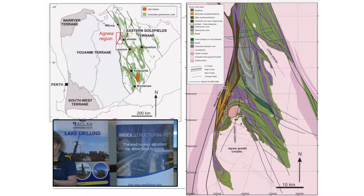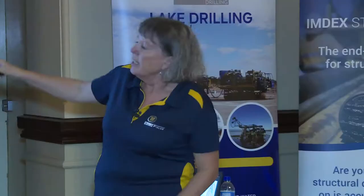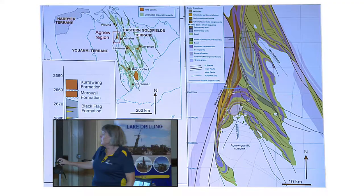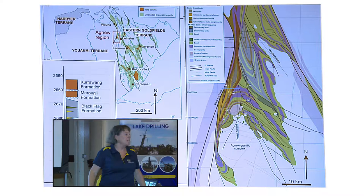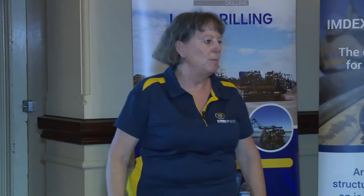The Agnew district is about 350 kilometres north of Kalgoorlie, and basically you've got a greenstone sequence that's pretty similar to the Kalgoorlie sequence. You've got the basal sequence of mafic and ultramafic units, overlaid by felsic and clastic sequences, and then the younger unconformably overlying lake basins. So again, very similar to Kalgoorlie—familiar territory.